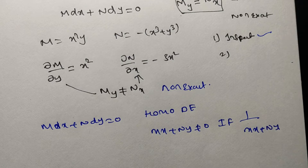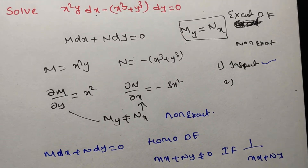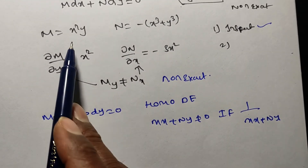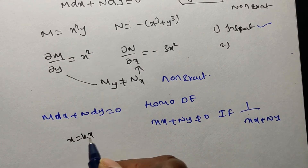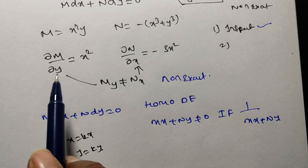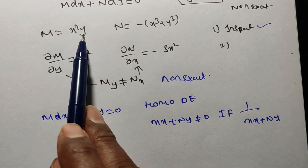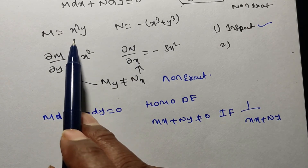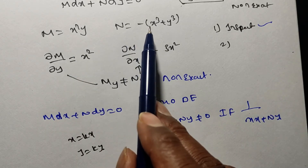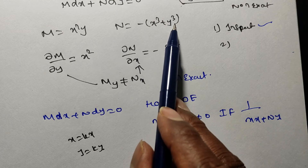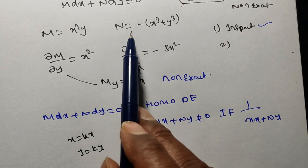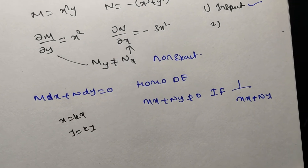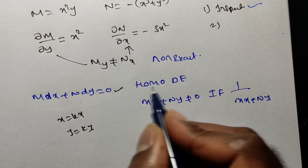First, I am verifying whether the equation is homogeneous. Homogeneous means M and N are homogeneous functions of the same degree. For M = x²y, substituting kx for x and ky for y gives k²x² · ky = k³x²y, so M is a homogeneous function of degree 3. For N = −(x³ + y³), substituting gives −(k³x³ + k³y³) = k³·(−x³ − y³), so N is also a homogeneous function of degree 3. Since both M and N have the same degree, the differential equation is homogeneous.